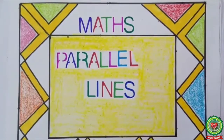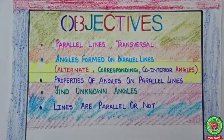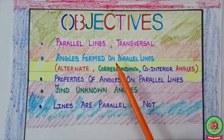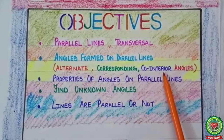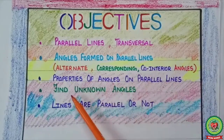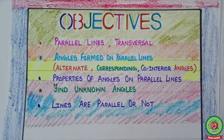Hello students, welcome to maths class. Today we are going to start with the chapter 'Parallel Lines.' The objectives of the chapter are: parallel lines, transversal, angles formed on parallel lines like alternate, corresponding, and co-interior angles, properties of angles on parallel lines, finding unknown angles, and determining whether lines are parallel or not.